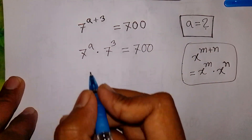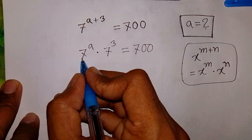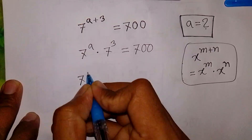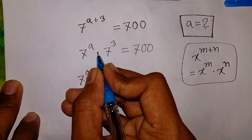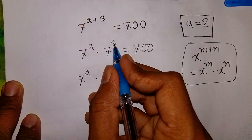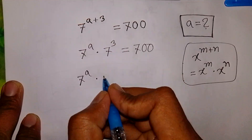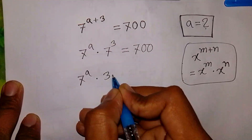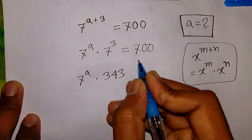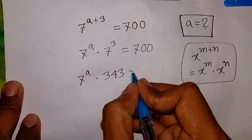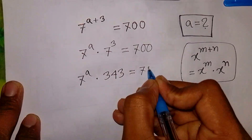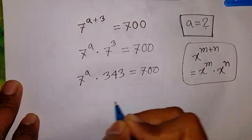In the next step, we have 7 to the power a times 7 to the power 3. Since 7 to the power 3 equals 343, this becomes 7 to the power a times 343, which equals 700.